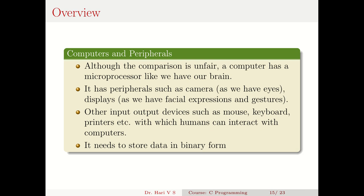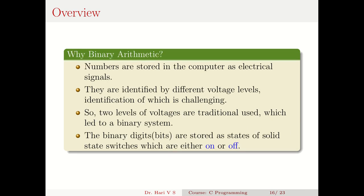Every computer needs to store data in binary form. Numbers are stored in the computer as electrical signals, and binary numbers are used because identifying different voltage levels is challenging. Traditionally two voltage levels are used, leading to the binary system. Binary digits are stored in solid-state switches which are either on or off — if on, it is a one; if off, it is a zero. That is why only two voltage levels are used: the binary digits are stored in solid-state switches that can be either on or off.